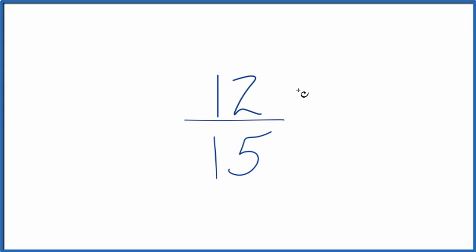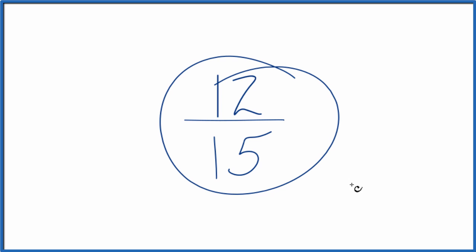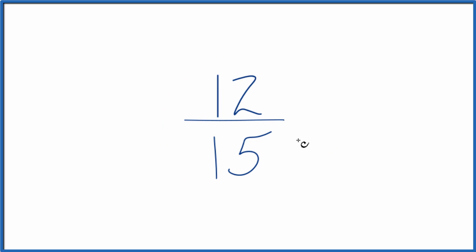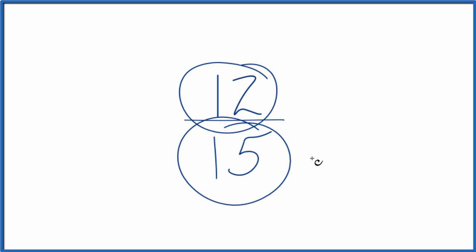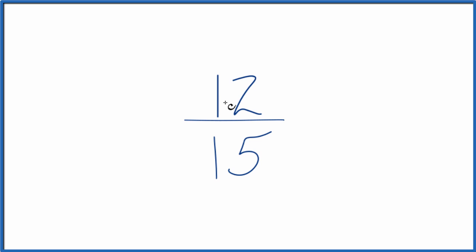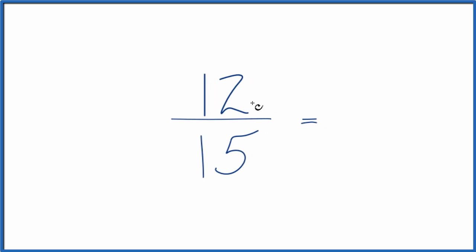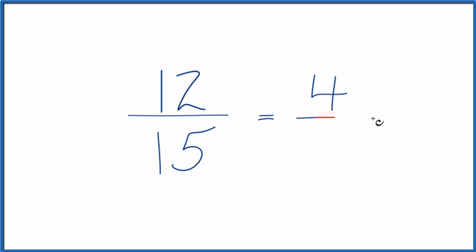Let's find three equivalent fractions for 12 fifteenths. First off, we could actually simplify 12 fifteenths, because we can divide both 12 and 15 by 3 — it'll go in evenly. So 12 divided by 3 equals 4, and 15 divided by 3 equals 5, giving us 4 fifths. And 4 fifths is an equivalent fraction for 12 fifteenths. If you divide 4 by 5 or 12 by 15, you get the same decimal number — they're equivalent.